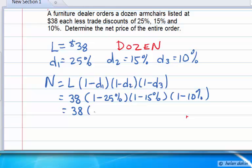Calculating, we have 1 less 25%, that leaves us with 0.75 or 75%, 1 minus 15% is 0.85 or 85%, and 1 less 10% is 0.90 or 90%.